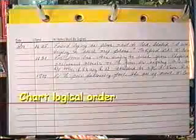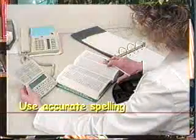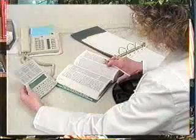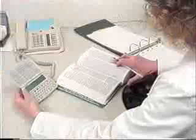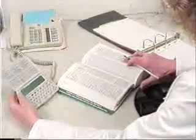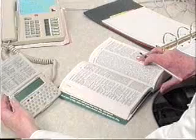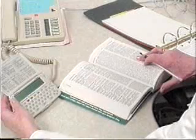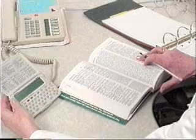Chart entries in correct sequence — for example, chart the care given in the order that it occurred. If a bed bath was given before the person was ambulated, be sure to chart that in the correct sequence. Use accurate spelling and punctuation in your charting, remembering this is a legal document. If you have a problem with spelling, utilize the medical dictionary available in your facility, ask someone else, or use a small electronic hand-held speller that you keep in your pocket.